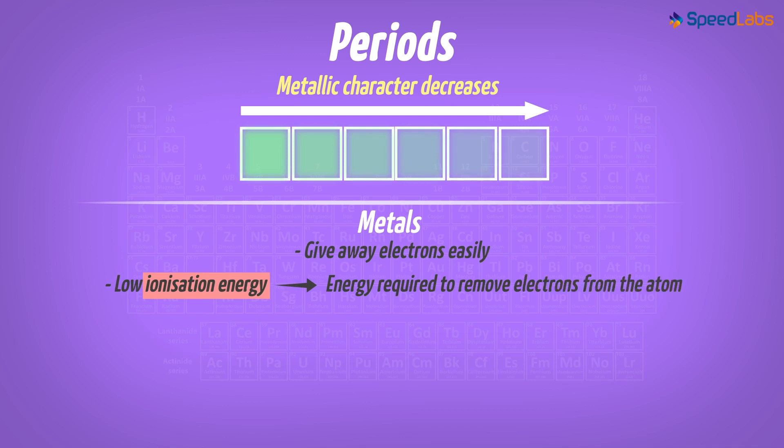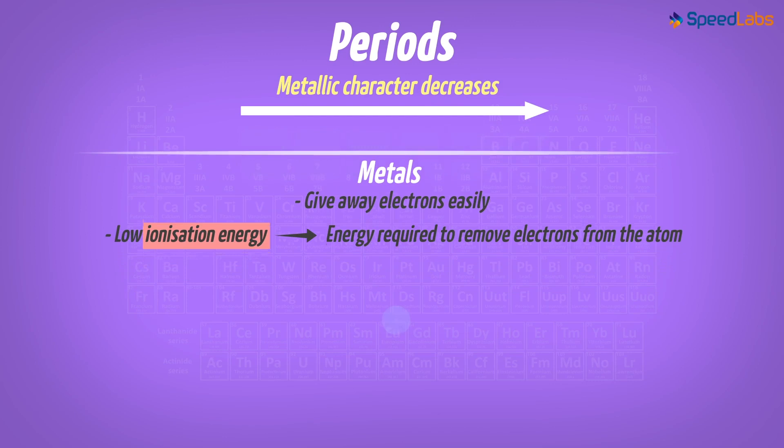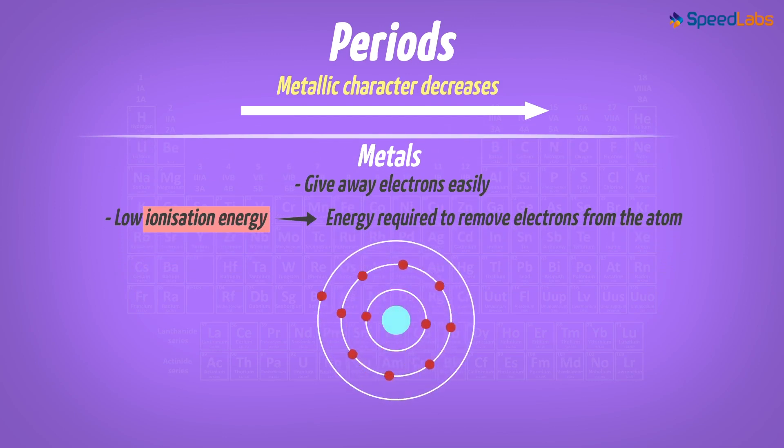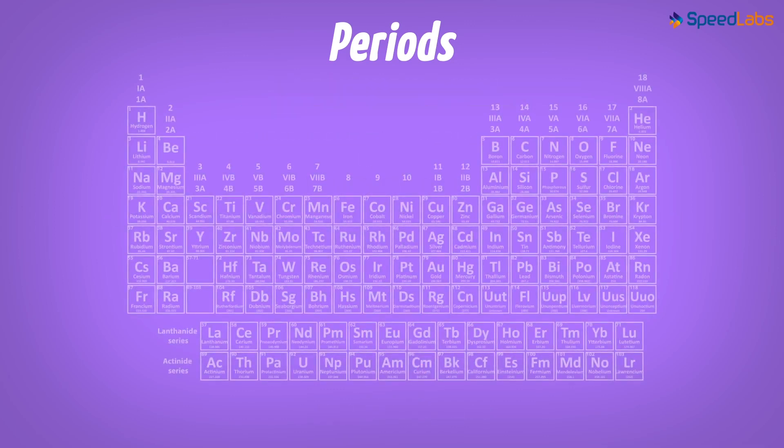Ionization energy is the energy required to remove electrons from the atom. So it takes small amounts of energy to remove electrons from their atoms. Metals have freely available electrons that can be easily lost to attain stable electronic configuration. But why are we talking about this? Well, that is because we find such a tendency shown by elements like sodium or magnesium. And these are placed towards the left in our table. So can we say that elements towards the left in a periodic table are metals?